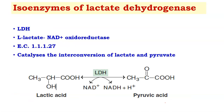Lactate dehydrogenase, or LDH, is the best example of isoenzymes. Its systematic name is L-lactate:NAD+ oxidoreductase, and its enzyme commission number is 1.1.1.27. LDH catalyzes the interconversion of lactate to pyruvate.